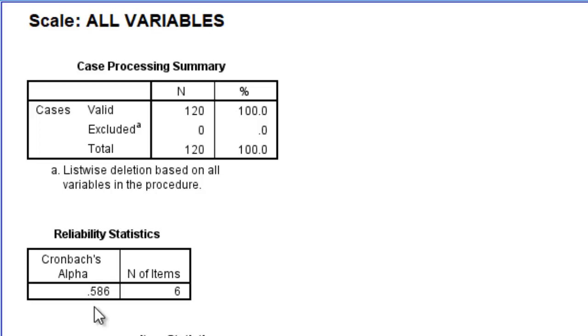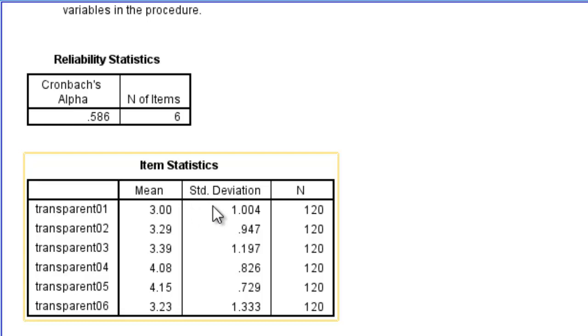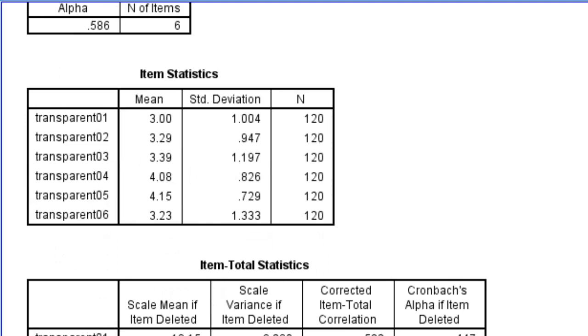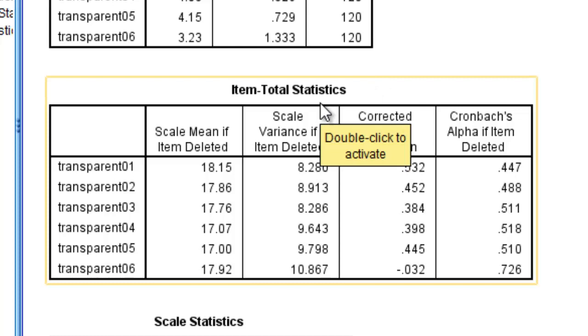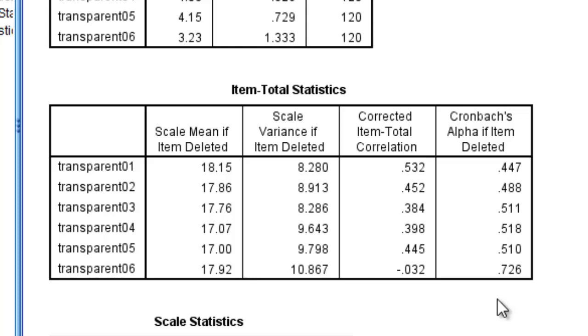What that will give us is a summary. Shows a total of 120 subjects took the assessment. Cronbach's alpha of 0.586, which is below the ideal point of 0.7 across the six items. Item statistics tells you what the means are, standard deviation, and the sample size for each of the items.